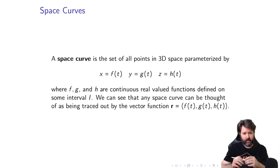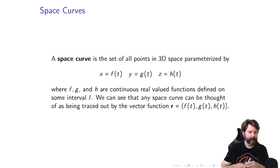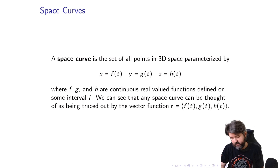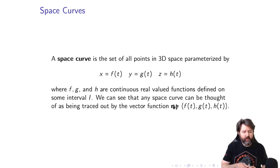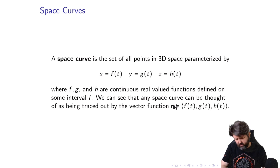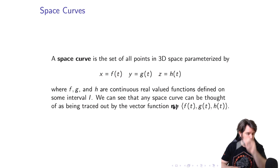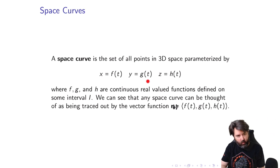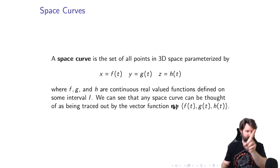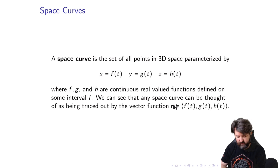Any space curve can be thought of as being traced out by a vector function. You can represent a space curve as parametric equations or as a vector function R of T — two different ways to think about the same thing. For any T, the parametric form gives you a point in XYZ space, while the vector function gives you the position vector of that same point. As T varies, the tips of those vectors trace out the curve in space.